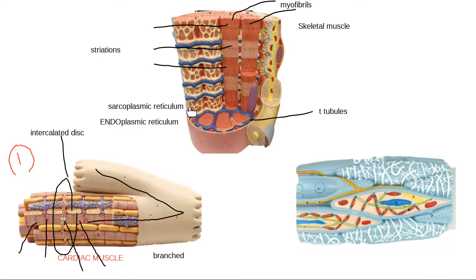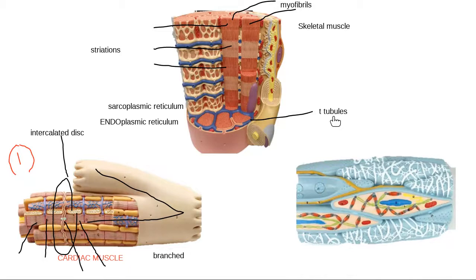So the sarcoplasmic reticulum — the spiderweb or cheesecloth — stores calcium. The T-tubules send the messages. And these big long protein tubes are myofibrils. Calcium makes your bones strong and helps your muscles to contract — so we need that calcium. Blue is a good way to remember T-tubules since you can almost see the color blue in the name.